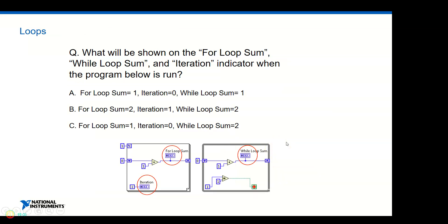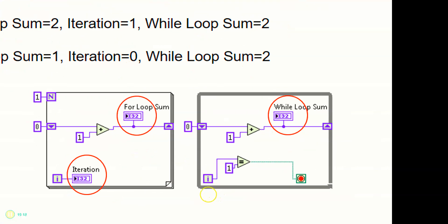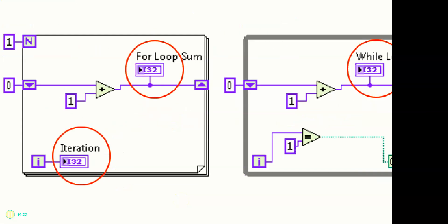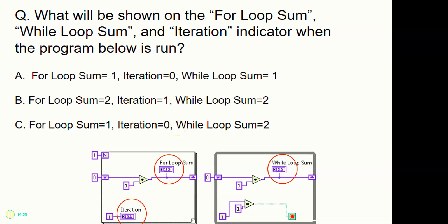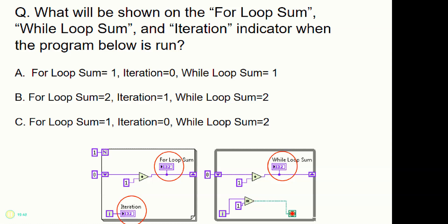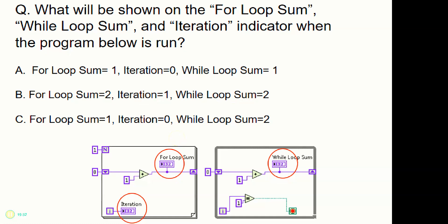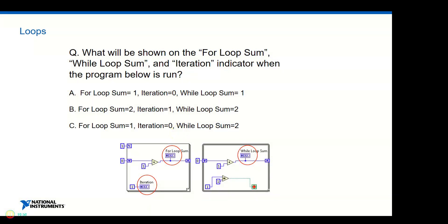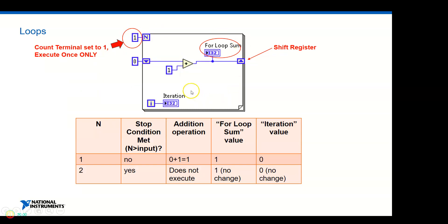Here's a short question: we have two loop structures - one For Loop and one While Loop. What would be the output when the program is executed? Is it A, B, or C? Put on your thinking caps. This involves a Shift Register - which acts like a memory device.